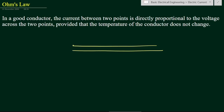This law states that for a good conductor — and we have assumed that this is a copper conductor — the current between two points: suppose we have a point A here and a point B here.